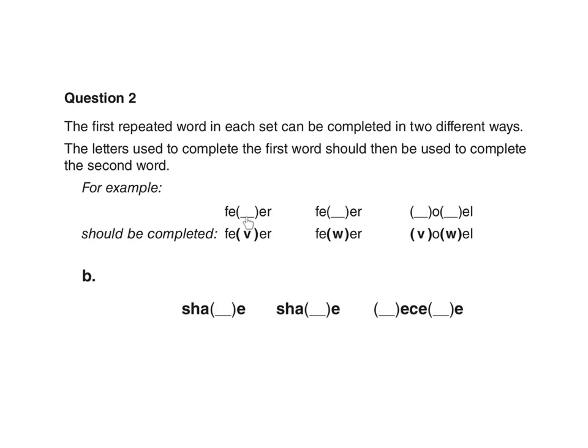For example, the first word can be completed with a V, like this, and with a W, like this. Then, using those letters in the same order in the second word, you can make the word vowel, like this.